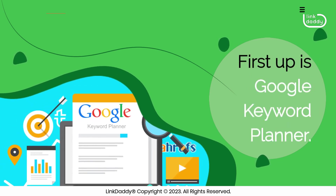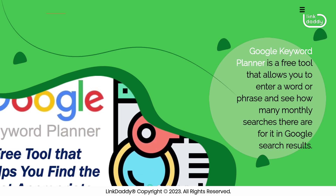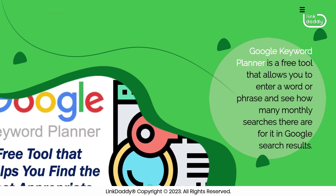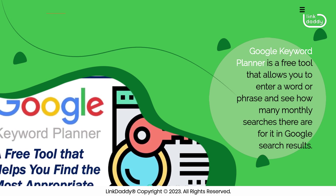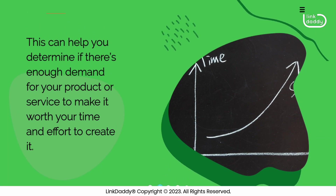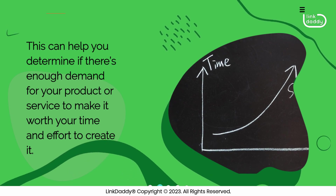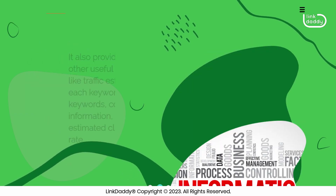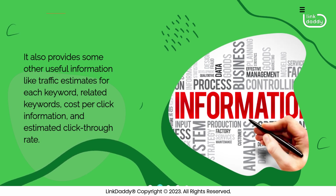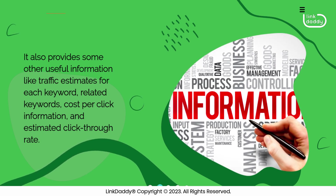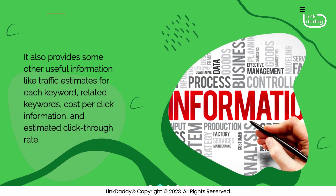First up is Google Keyword Planner. Google Keyword Planner is a free tool that allows you to enter a word or phrase and see how many monthly searches there are for it in Google search results. This can help you determine if there's enough demand for your product or service to make it worth your time and effort to create it. It also provides other useful information like traffic estimates for each keyword, related keywords, cost per click information, and estimated click-through rate.